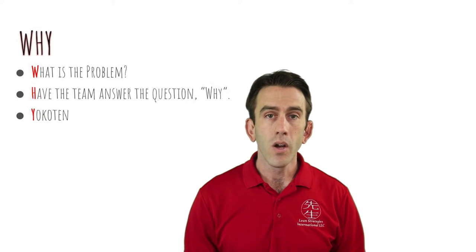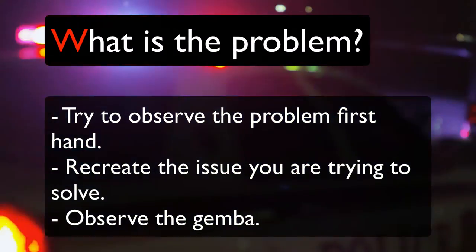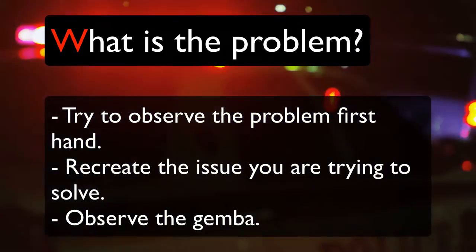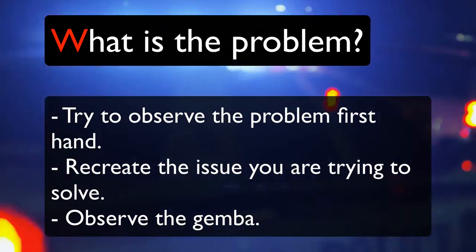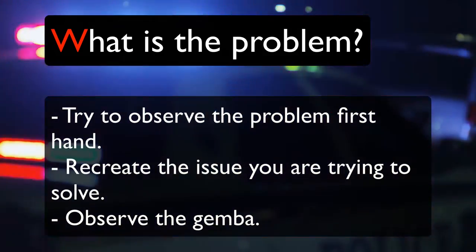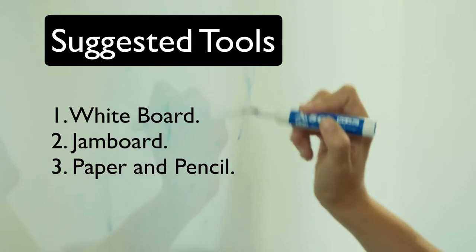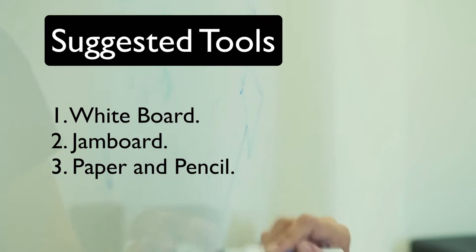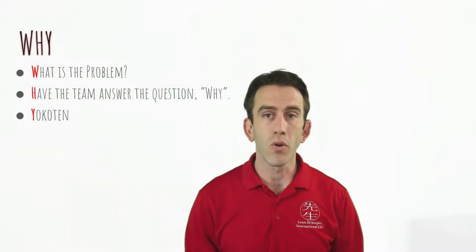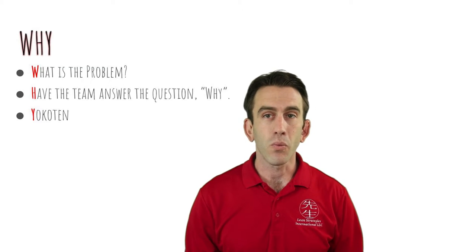You can use the why steps to make the process a little easier. We'll begin with: what is the problem? First, define what the problem is by answering that basic question. Try to observe the problem firsthand — you may need to recreate the issue or observe the Gemba for a bit. You may want to use a whiteboard, jam board, paper and pencil, or some other means of defining the problem so that it is up and visible for everyone to review and update. This will give you the ability to dig into the many different directions that your analysis will take you.